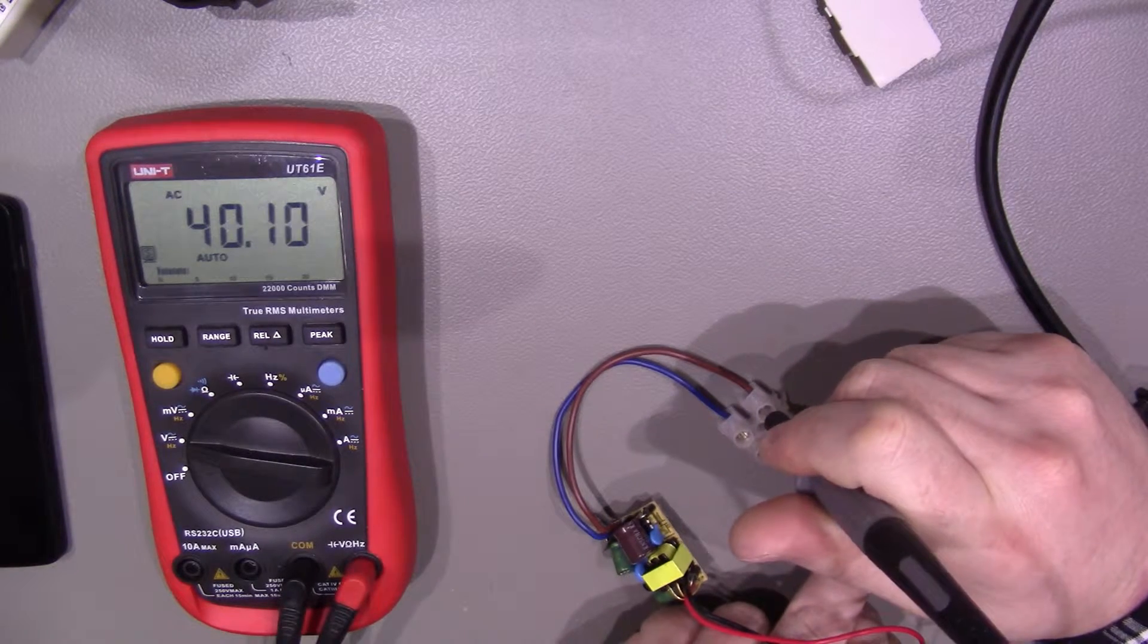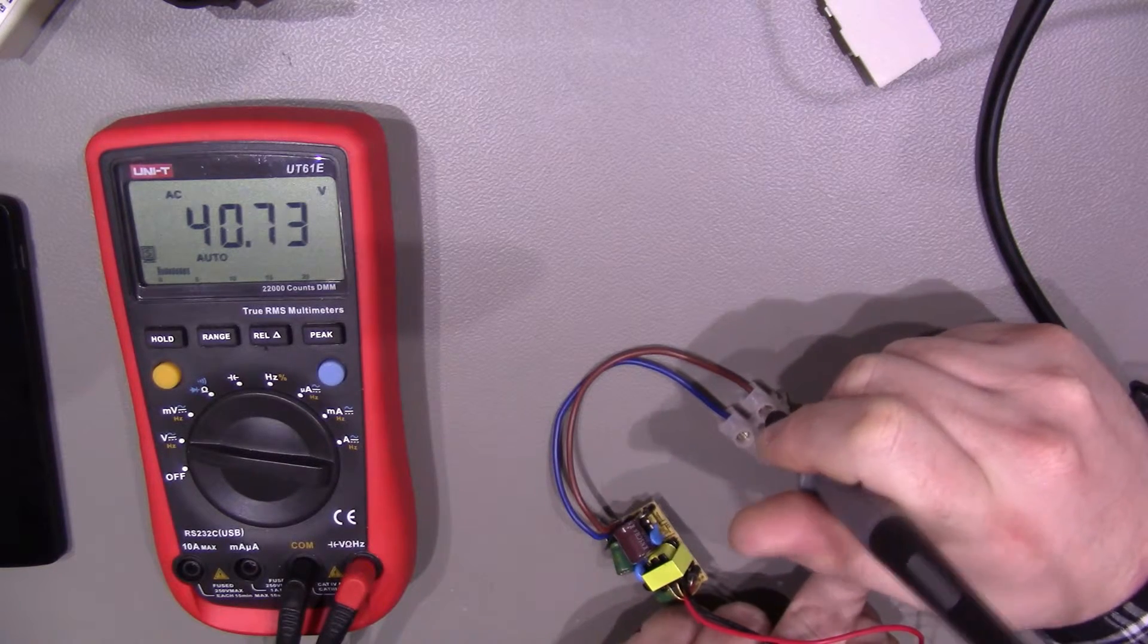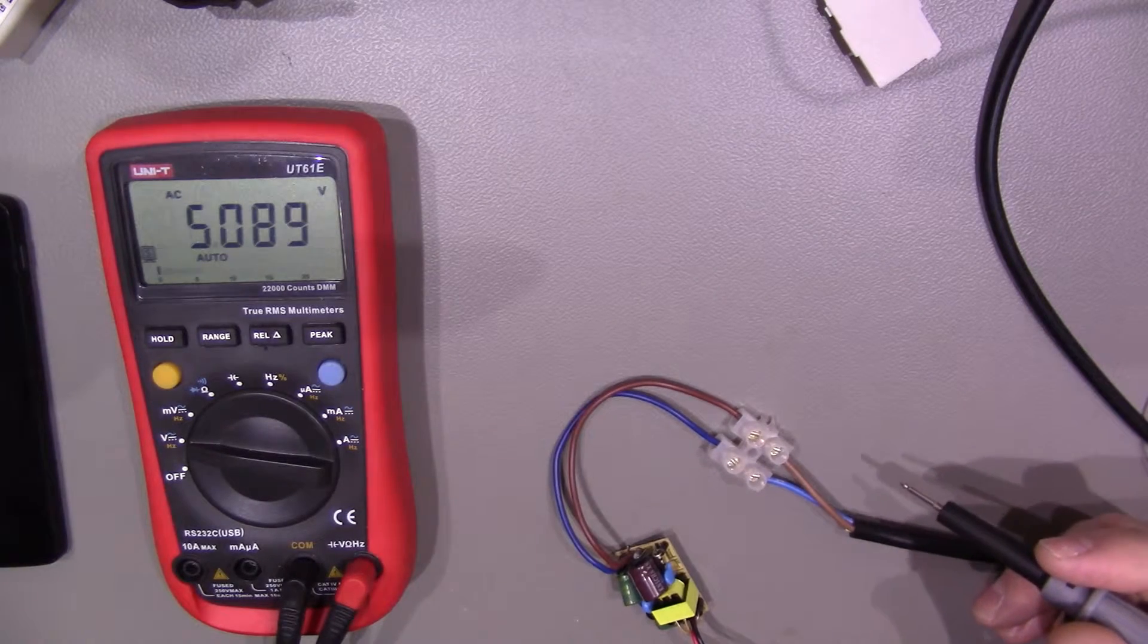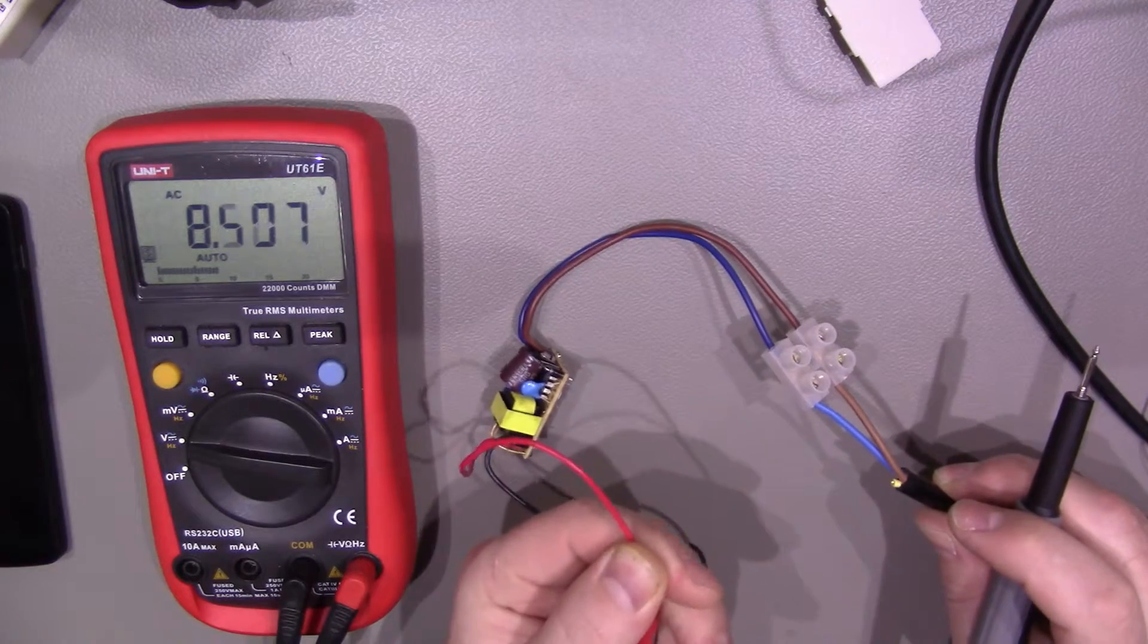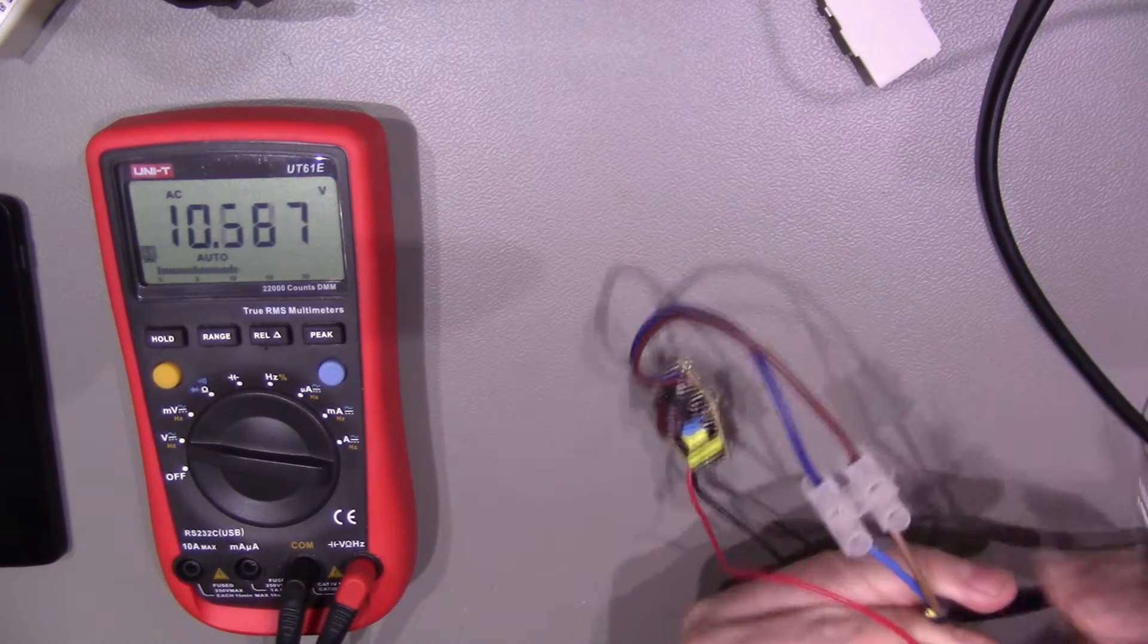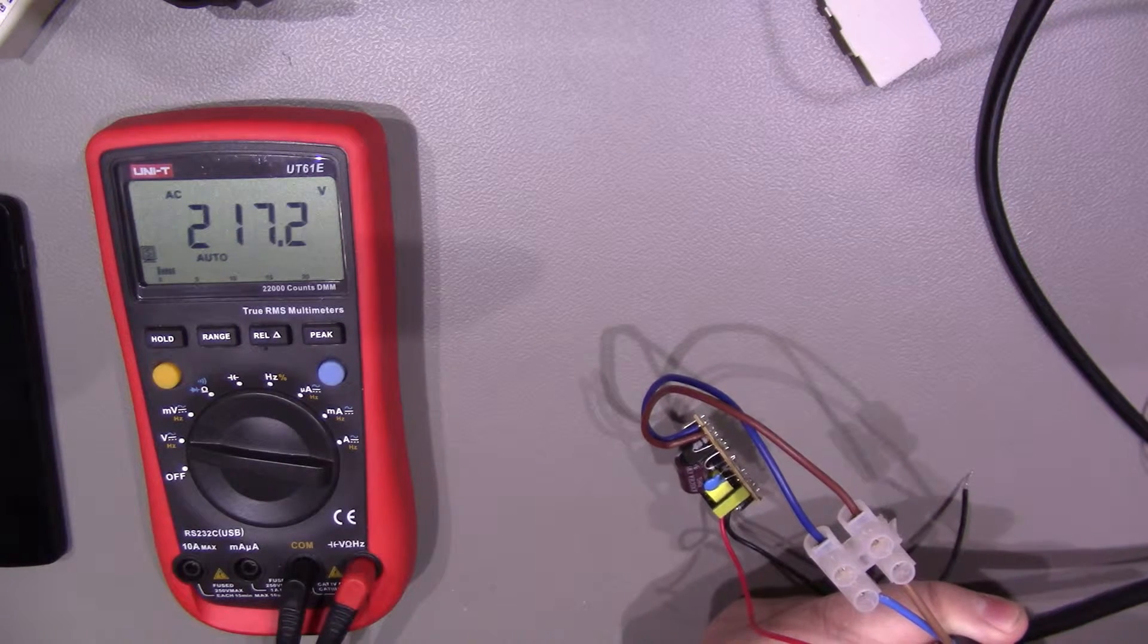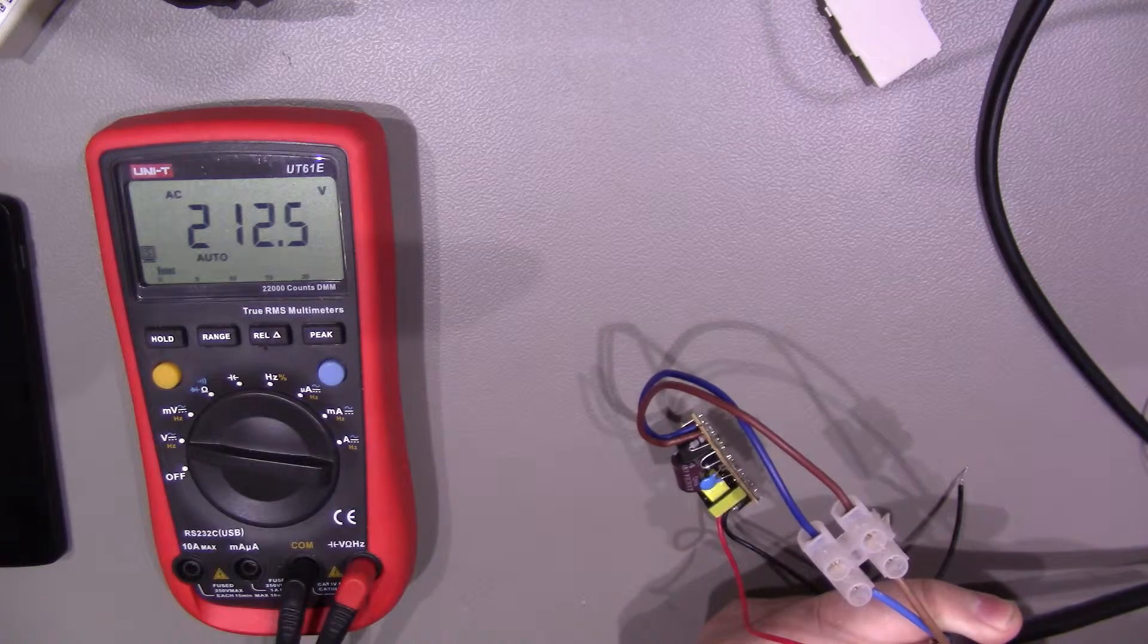And between neutral and AC there, live coming in, 40 volts there. Now this is a problem because if I touch, connect up to the live there and connect it to the earth here, you will see we get the same results, actually 212.